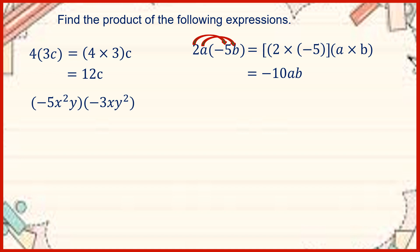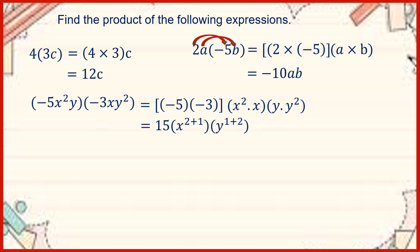Now let us have another one. Supposing we have negative 5x squared y times negative 3xy squared. We are going to multiply negative 5 times negative 3 times x squared times x times y times y squared. Negative 5 times negative 3 is equal to positive 15. Then we add the exponents: x raised to 2 plus 1 times y raised to 1 plus 2. Simplifying further, we get 15x to the third y to the third.